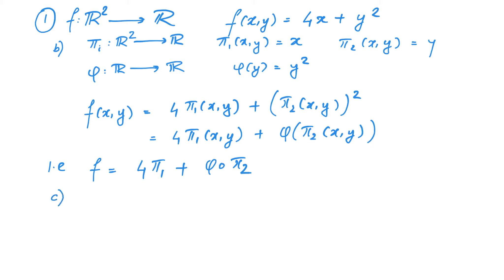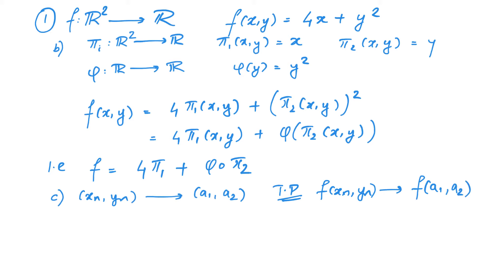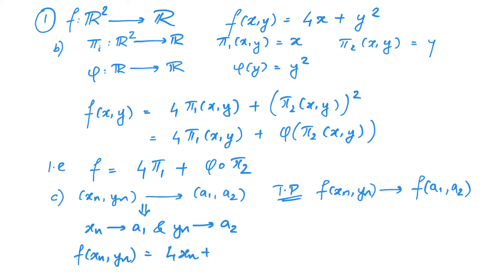Finally, let us prove the continuity of f using the sequential criterion. Given any sequence (xₙ, yₙ) that converges to (a₁, a₂), we have to prove that f(xₙ, yₙ) converges to f(a₁, a₂). Notice that (xₙ, yₙ) → (a₁, a₂) if and only if xₙ → a₁ and yₙ → a₂. If xₙ → a₁ then 4xₙ → 4a₁, and if yₙ → a₂ then yₙ² → a₂². Thus f(xₙ, yₙ) = 4xₙ + yₙ² converges to 4a₁ + a₂² = f(a₁, a₂), proving continuity by the sequential criterion.